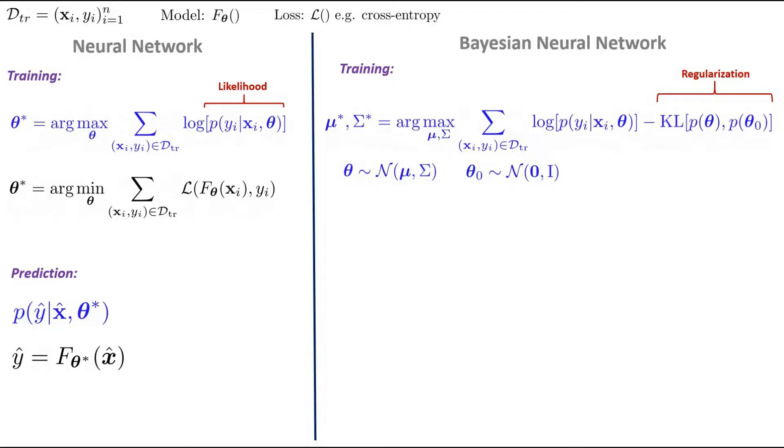In practical terms, like before, the log likelihood term translates to a loss function. Note the change in sign of the KL term, which occurs because we are now minimizing instead of maximizing.